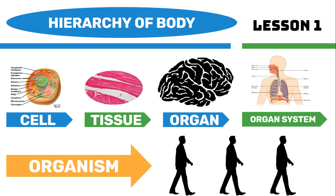Several organ systems make up our bodies. If I were to name a few: the circulatory system, the nervous system, the respiratory system, the excretory system — all of these are important systems that work together. And then, if we combine all of these systems to perform all the functions, we have an organism, which is us.